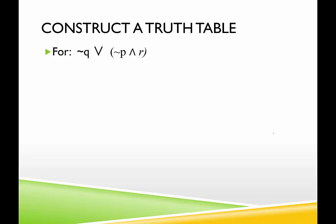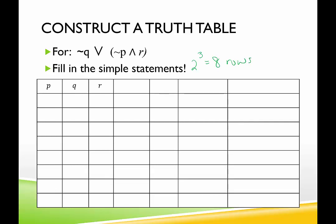In the next example we have not q or (not p and r) — three simple statements, so two to the third equals eight rows. For p, I do four trues followed by four falses. For q, I do two true, two false, two true, two false. For r, I alternate true, false, true, false, true, false, true, false. This gives all eight unique combinations of truth values.